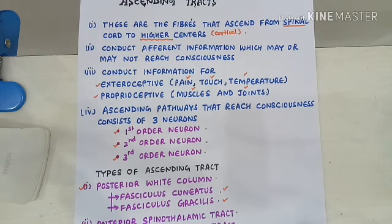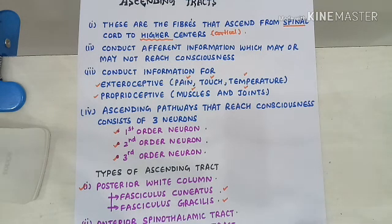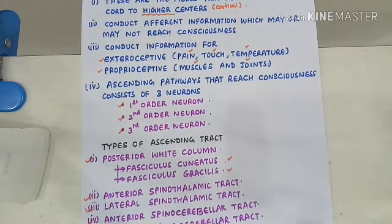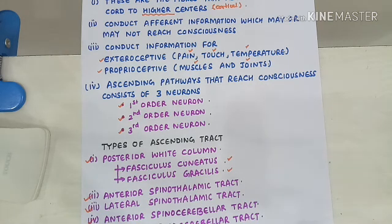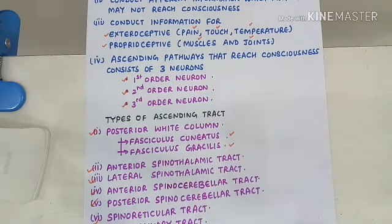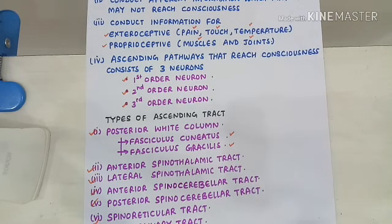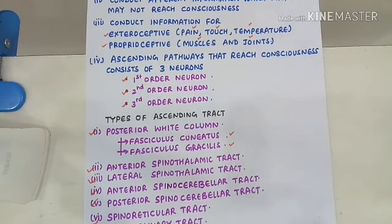The ascending tracts present in the posterior white column are the fasciculus cuneatus and the fasciculus gracilis. We will be continuing the information on this posterior white column in the next section. Another type of ascending tract is the spinothalamic tract, of which there are two types: the anterior spinothalamic tract and the lateral spinothalamic tract. There are also two types of spinocerebellar tract — anterior and posterior — as well as the spinoreticular tract and the spinoolivary tract.